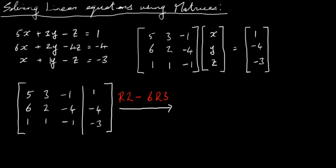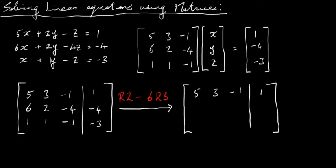So I'm multiplying row three by six and subtracting it from row two. Nothing happens to the first row, so I'll just write it down again. For row two: 6 minus 6×1 = 0; 2 minus 6×1 = minus 4; minus 4 minus 6×(minus 1) = minus 4 + 6 = 2; and minus 4 minus 6×(minus 3) = minus 4 + 18 = 14. The last row is unchanged.